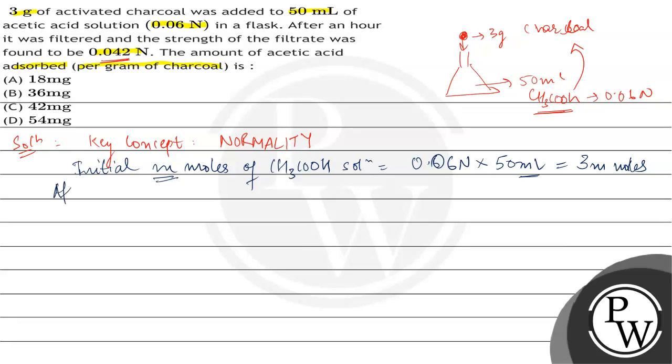Now that means the new millimoles of acetic acid solution are 0.042 multiplied by 50 mL which will give us 2.1 millimoles.